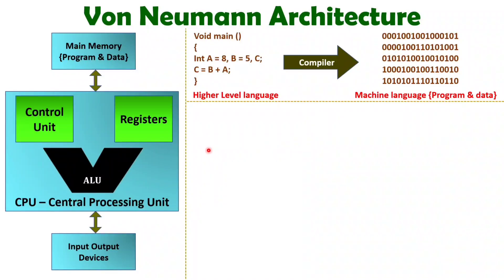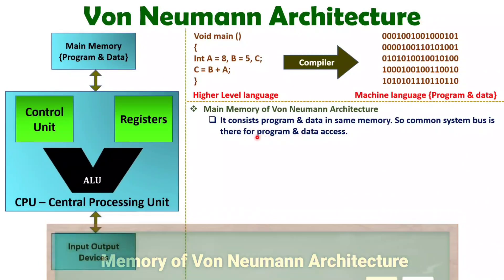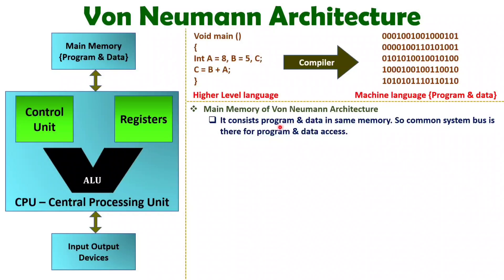When we talk about the main memory of Von Neumann architecture, it consists of both program and data in the same memory. A common system bus is used for accessing both the program and the data.